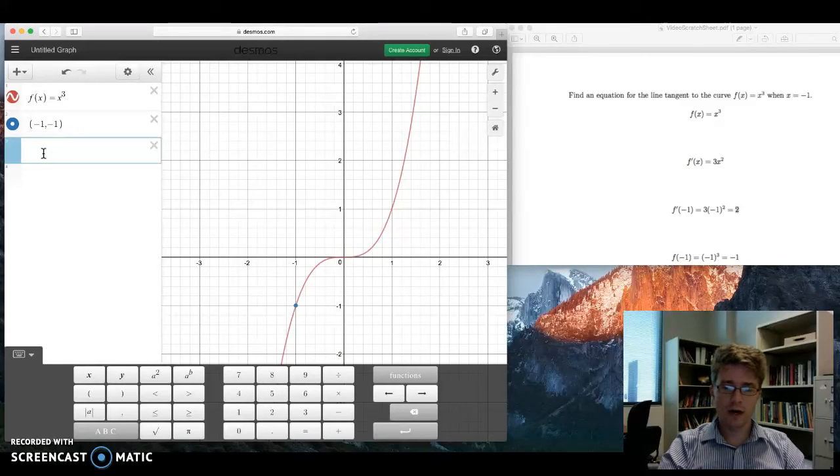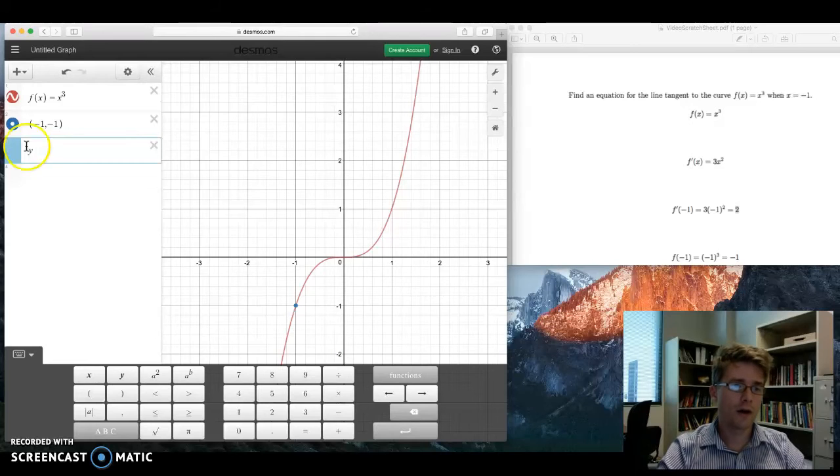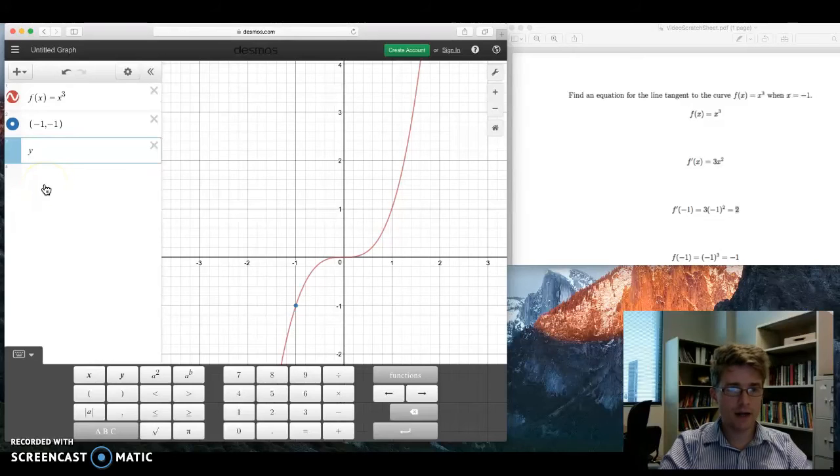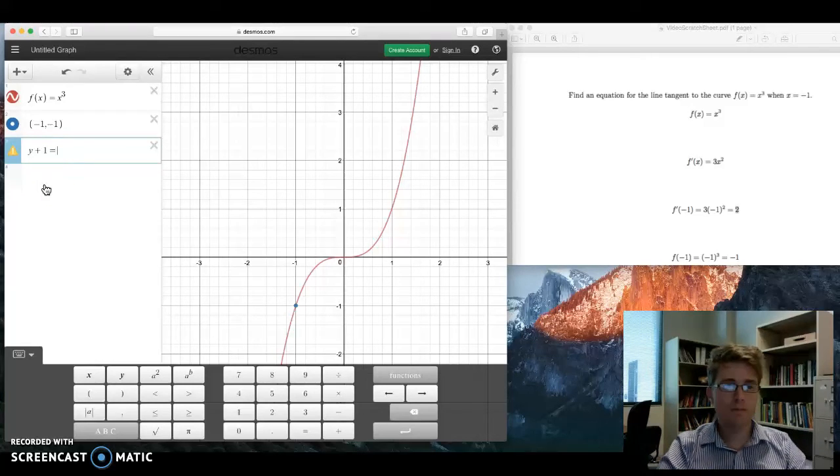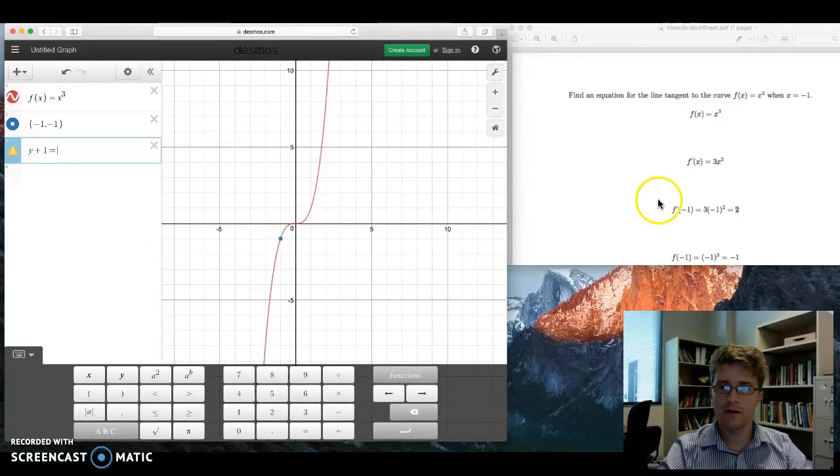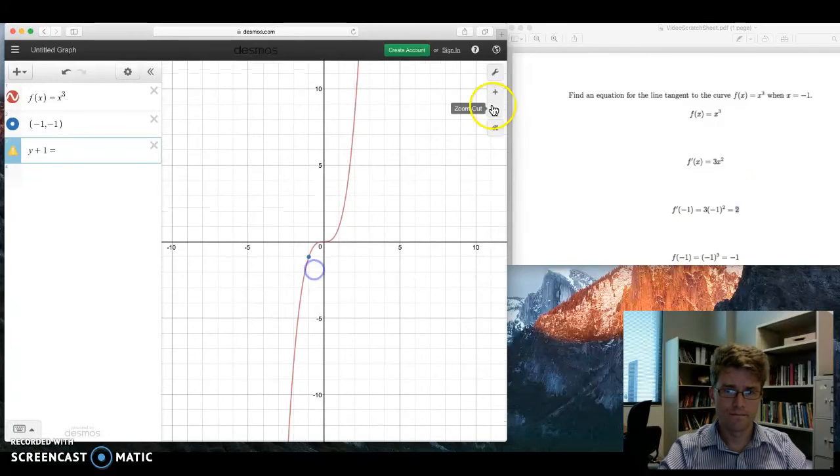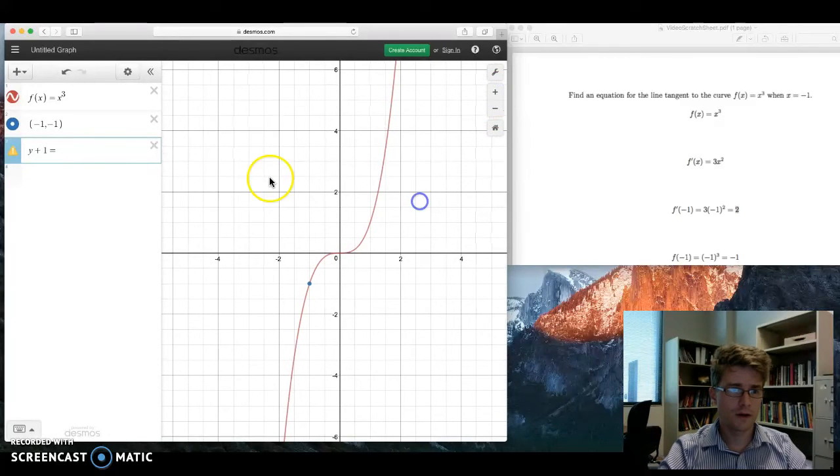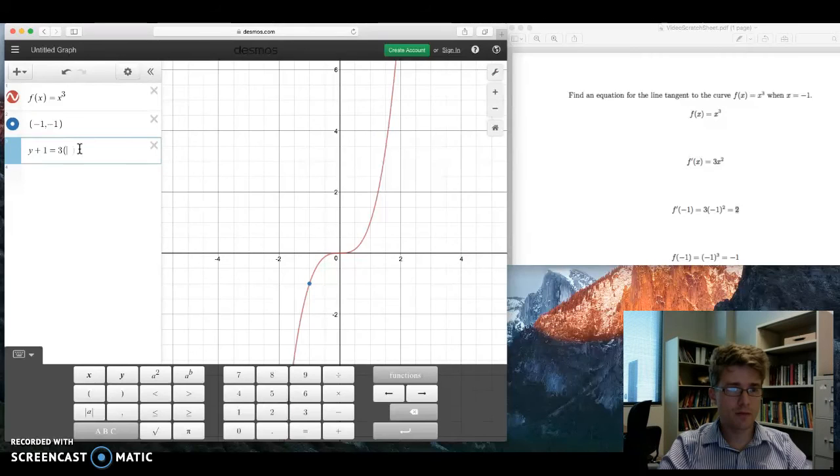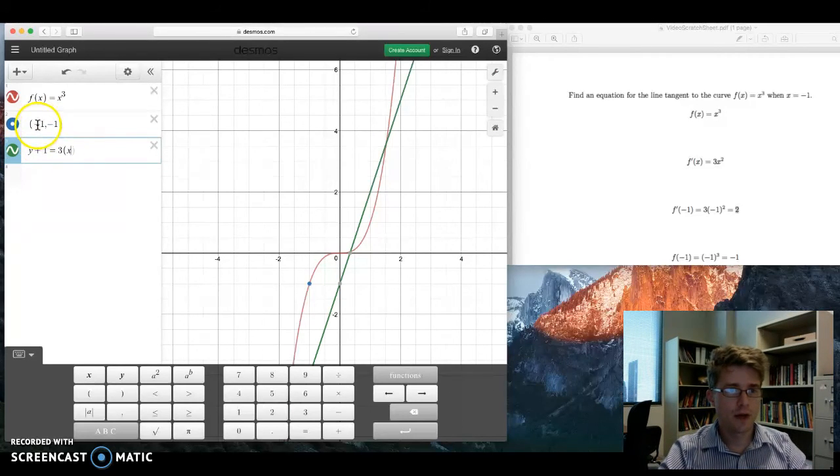So point-slope form is y minus y1. So in this case, y1 is negative 1. So this is going to be y minus negative 1, which is plus 1, equals the slope of our line. Now the slope of our line is this value over here. That's going to be 3. So our slope is 3. Then we multiply by x minus x1. Here's x1. So that's actually going to be x plus 1.